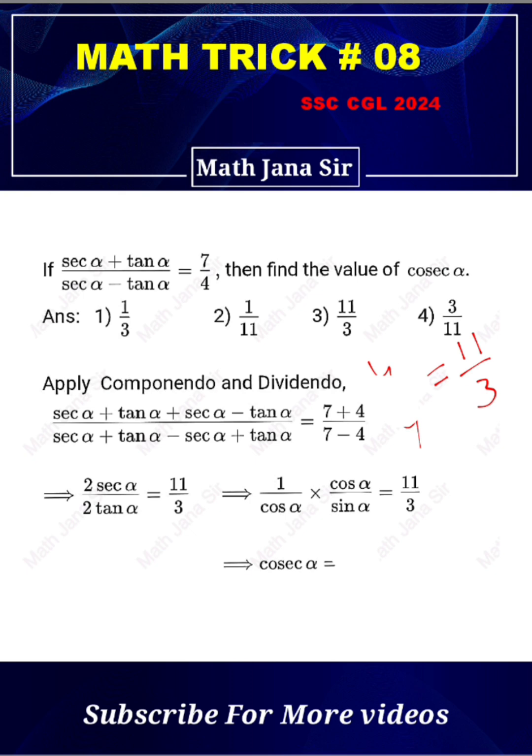Cosec α equals 11/3. So here option 3 is the right answer for now. Thank you.